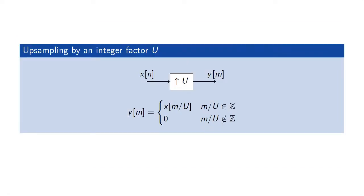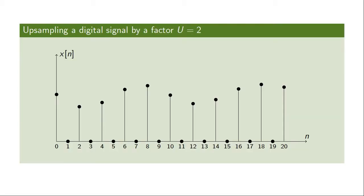The basic building block in an interpolation or upsampling system is the upsampler. The upsampling function simply takes an input signal and increases the sample rate by putting in zeros in between known samples. Graphically, we would have our known signals from the original signal and fill in the blanks with just zeros. This is usually not what we want as the final result — it is probably very far from the true underlying signal — however, it is a useful building block in more advanced interpolation circuits.